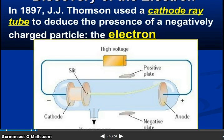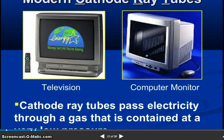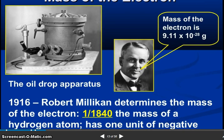So discovery of electrons. In 1897, J.J. Thomson used a cathode ray tube to deduce the presence of a negatively charged particle, the electron. The cathode ray tube has cathode, sleeves, high voltage, positive plate, negative plate, and anode. Modern cathode ray tubes are used in televisions and computer monitors. Cathode ray tube passes electricity through a gas that contains a mass of electrons.